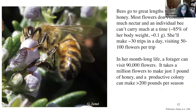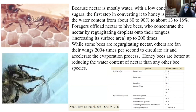Bees go to great lengths to make honey. Most flowers don't contain very much nectar, and an individual bee can carry only about 85 percent of her body weight — about a tenth of a gram — making 30 trips per day, visiting 50 to 100 flowers per trip. Over her month-long life, a forager can visit 90 to 100 thousand flowers. It takes a million flowers to make just one pound of honey, and a productive colony can make 200 pounds a season.